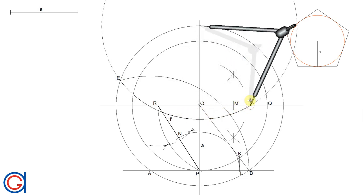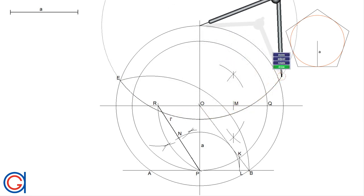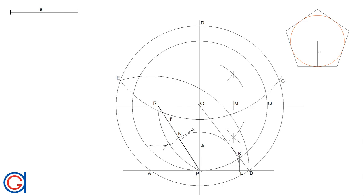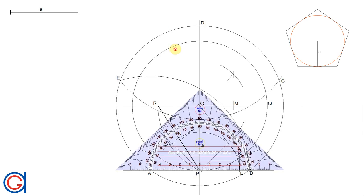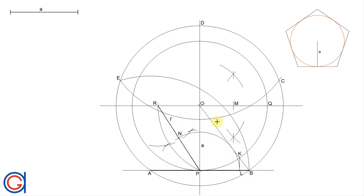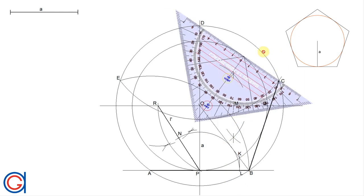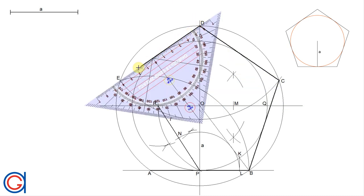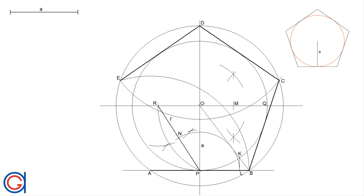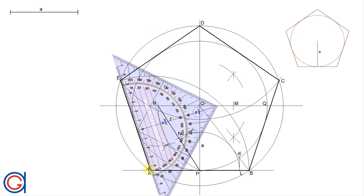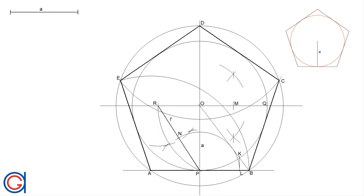We now have our five vertices A, B, C, D, and E. The only step left is to join the five vertices with a thicker line. We join vertex A to B, then B to C, C to D, D to E, and finally E to A. Here you have the regular pentagon given its apothem A. I hope this video has helped you.